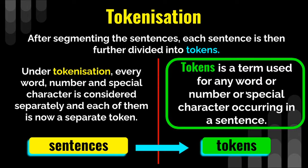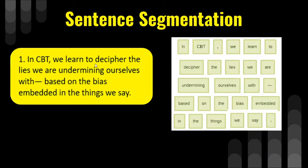Token is a term used for any word, number, or special character occurring in a sentence. It is a very simple definition. Now sentences are converted into tokens. After converting the corpus into sentences, we have got the first sentence. In this first sentence we can see there are words and special characters. Each single unit of information is converted into a token. For example, one word is one token, CBT is another token, and a single comma sign is an individual token. This way the whole textual information of these sentences will be converted into tokens.